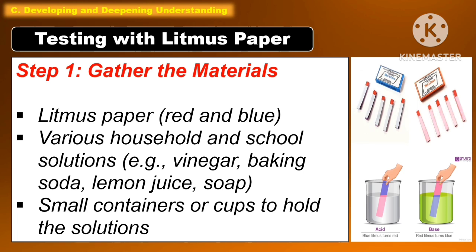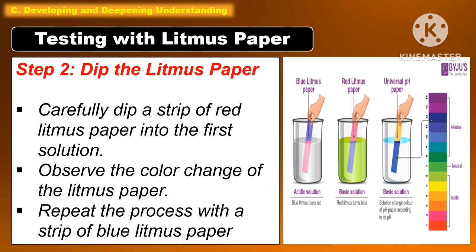In testing with litmus paper, for step one, gather all the materials such as litmus paper, various household and school solutions, and small containers or cups to hold the solutions. For step two, carefully dip a strip of red litmus paper into the first solution and observe the color change. Then repeat the process with a strip of blue litmus paper.